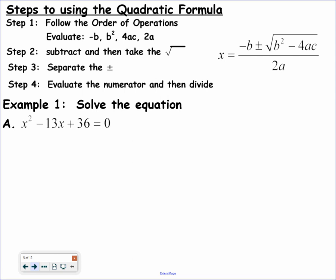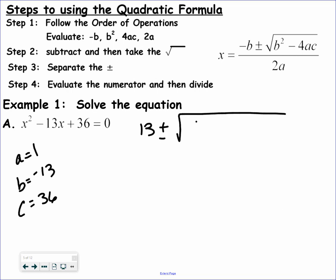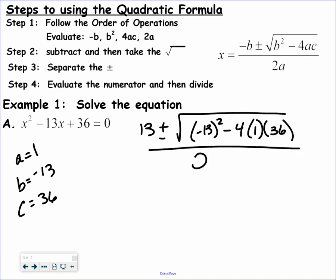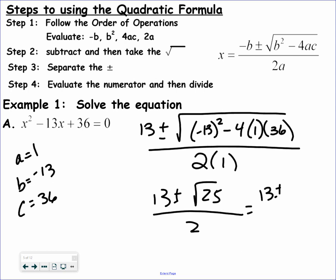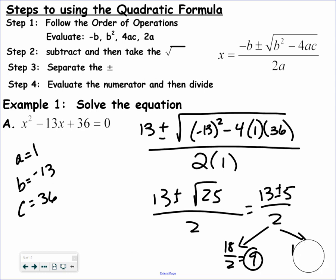We are going to do this question again using the quadratic formula. So A, B, C — negative B plus or minus the square root of B squared. Be careful when you're squaring a negative — always put it in parentheses. Minus 4AC, all over 2A. The hard part is what's known as the discriminant, the stuff under the radical. I'm going to turn my calculator on and get the square root of 25. Square root of 25 is 5. Breaking into two problems: 13 plus 5 is 18, divided by 2 is 9; and 13 minus 5 is 8, divided by 2 is 4.